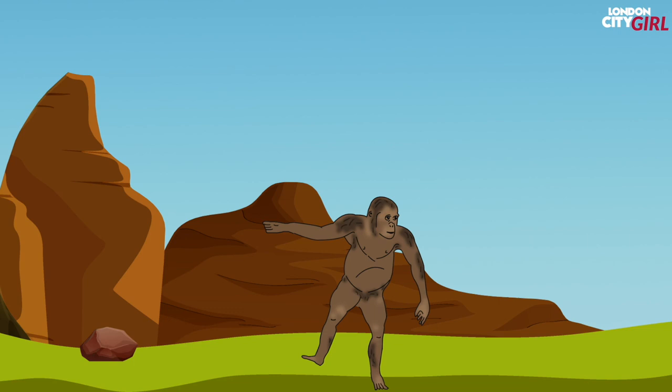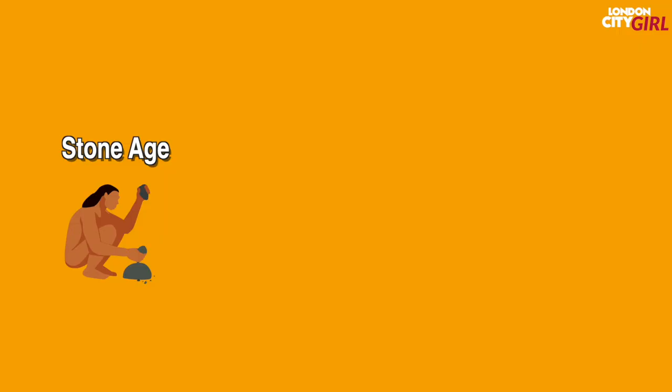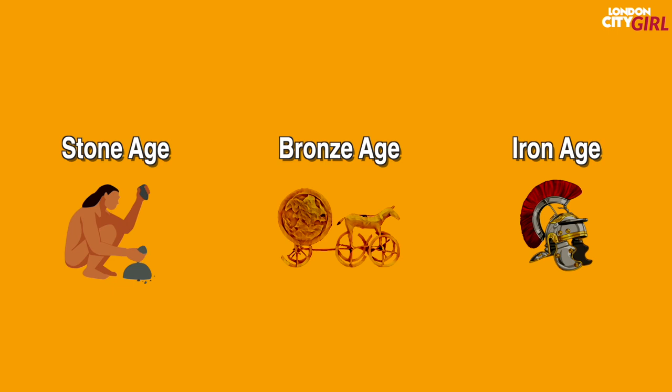This allowed them to free up their hands for other tasks. Roughly 2.6 million years ago the first humans emerged and learned how to use modified stones as tools thus ushering in the Stone Age. The Stone Age is the first period in the Three Age system used to divide the timeline of human pre-literary history. The Stone Age is followed by the Bronze Age which is followed by the Iron Age.